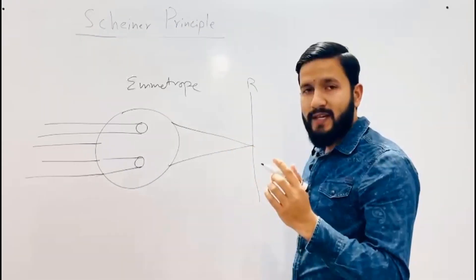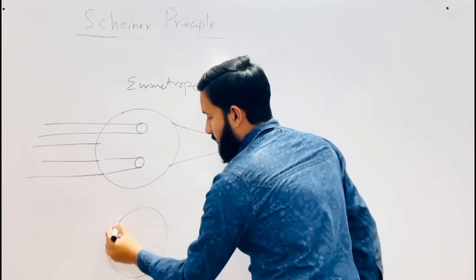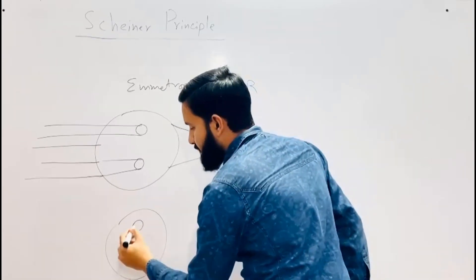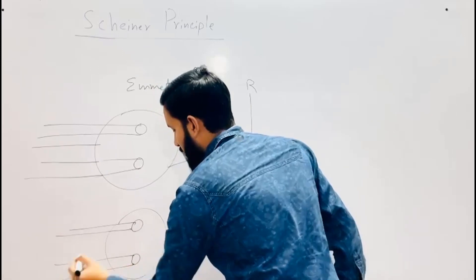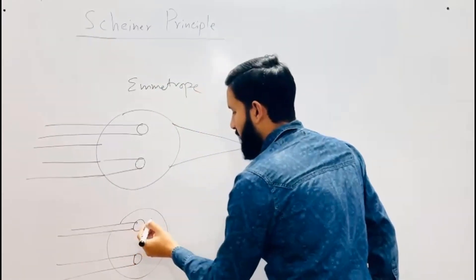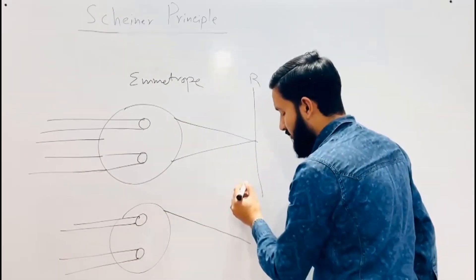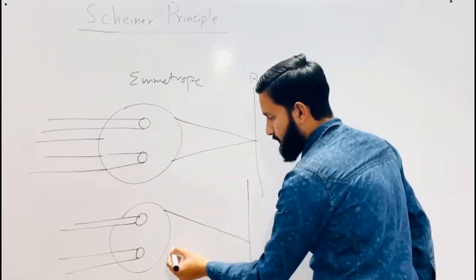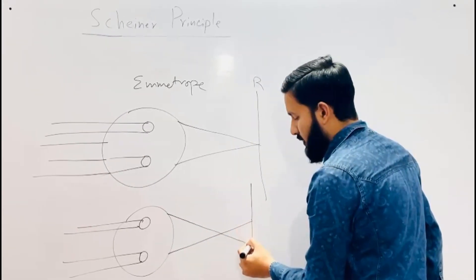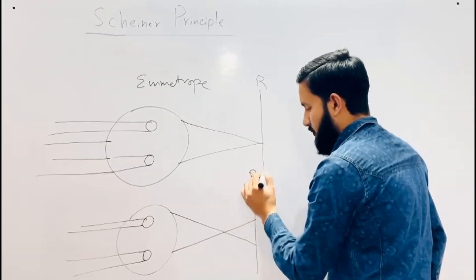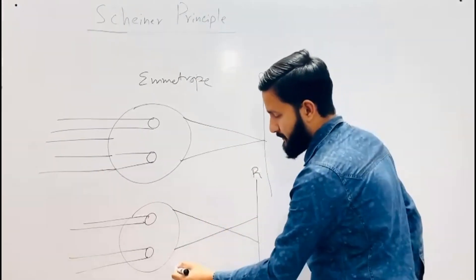But in the case of refractive error, two different light spots are formed on the retina. In the first possibility, light rays coming from the pinhole apertures are focused in front of the retina and then diverge to form two spots on the retina. This is the case of myopia.